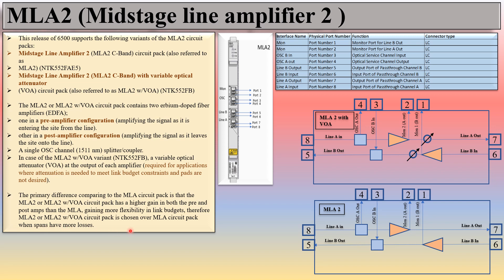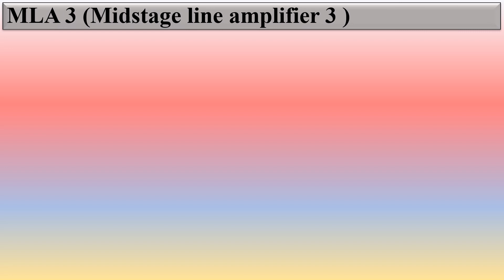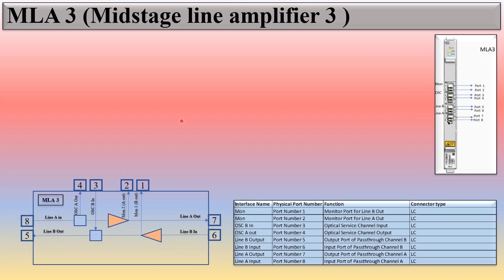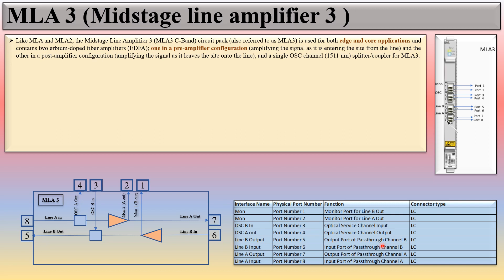MLA2 and MLA2 with VOA circuit packs are chosen over MLA circuit packs where the span has more losses. Moving to MLA3 — mid-stage line amplifier 3 — the physical representation is again very similar to MLA and MLA2. Like MLA and MLA2, MLA3 is used for both edge and core applications and again contains two EDFAs: one in pre-amplifier configuration and one in post-amplifier configuration, with a single OSC channel splitter/coupler.